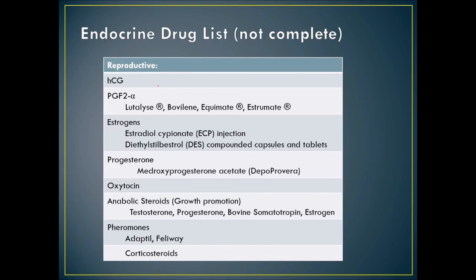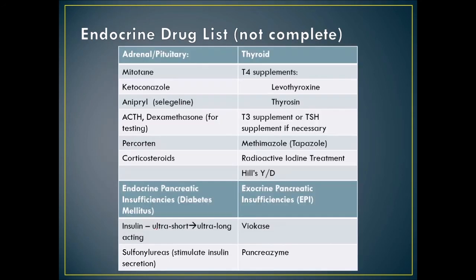For endocrine pancreatic conditions: insulin — which can be ultra-short-acting to ultra-long-acting — and sulfonylureas. For exocrine pancreatic insufficiency, products like Viokase or Pancreazyme are typically used. You will need to know where these drugs are used, why they're used, and what happens when you overdose them.